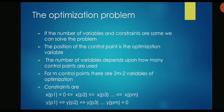For m control points there are 2m minus 2 variables of optimization. Using some complicated mathematics the authors come up with a method to account for all these constraints. They come up with these number of constraints and they arrive at an equation.